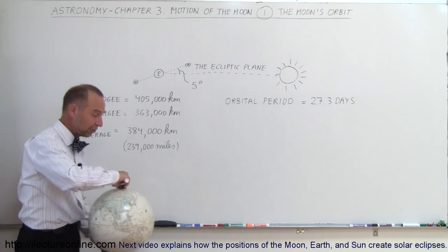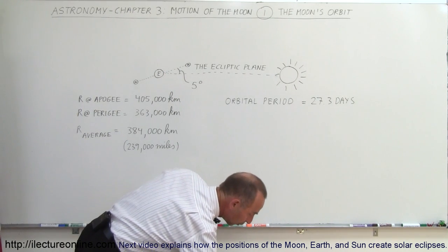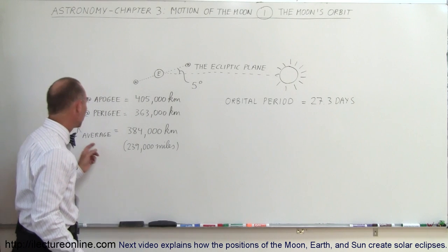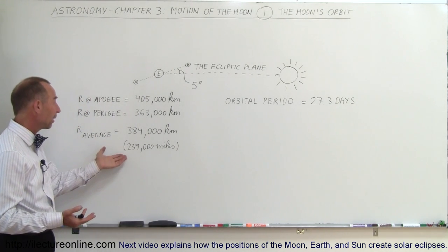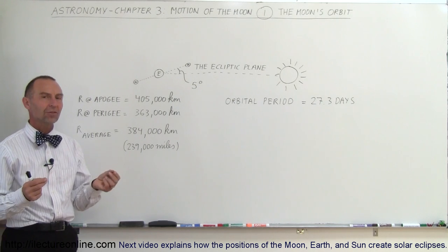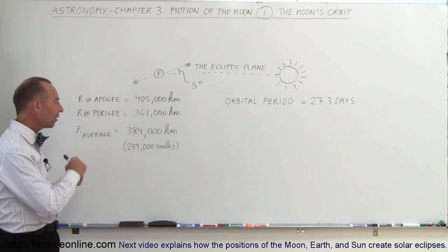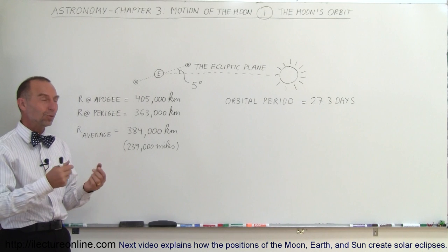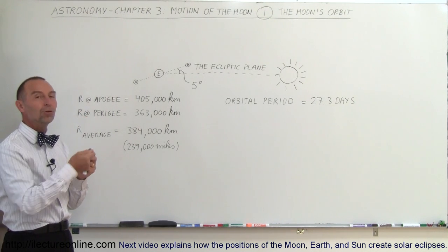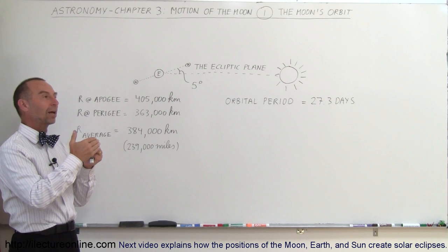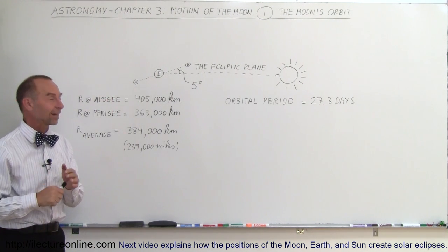A few more specifics about the Moon's orbit. Notice that the average distance between the Moon and the Earth is about 384,000 kilometers, about 239,000 miles. It takes light a little over one second to travel from the Earth to the Moon. So if we were to turn on a flashlight and point it to the Moon, that light from the flashlight will actually reach the Moon a little bit over a second later.